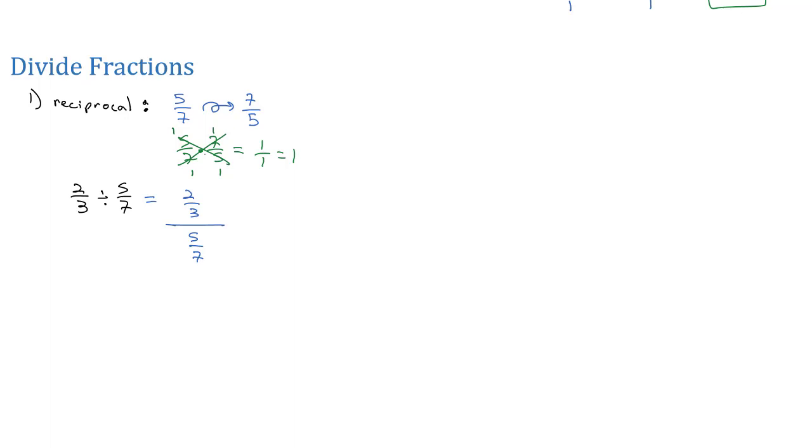Well, I can multiply by the same thing on top and bottom, and I'll get an equivalent fraction. And look what happens when we multiply by the reciprocal of 7 fifths on top and bottom. On the top, we get 2 times 7 is 14, over 3 times 5 is 15.